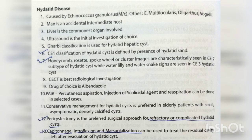Hydatid disease is caused by Echinococcus granulosus most commonly; other species include Echinococcus multilocularis. Man is an accidental intermediate host. The liver is the commonest organ involved. Ultrasound is the initial investigation of choice; Gharbi classification is used for hydatid hepatic cysts. CE1 is defined by presence of hydatid sand; honeycomb/rosette or cluster images are seen in CE2 subtype; water lily and water snake signs are seen in CE3. CECT is the best radiological investigation. Drug of choice is albendazole. Percutaneous aspiration, injection of scolicidal agent, and re-aspiration can be done in selected cases. Conservative management is preferred in elderly patients with small, asymptomatic, densely calcified cysts. Pericystectomy is the preferred surgical approach for refractory or complicated hydatid cysts. Capitonage, introflexion, and marsupialization can be used to treat the residual cavity.